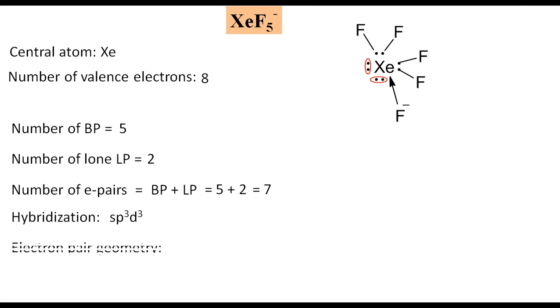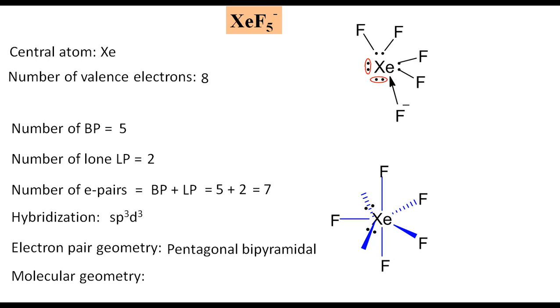The electron pair geometry will be pentagonal bipyramidal since hybridization is sp3d3. From previous knowledge we should put the lone pairs on the equatorial positions because the number of electron pairs is odd. For the molecular geometry we should add the fluorine atoms on the rest of the corners and ignore the lone pairs.